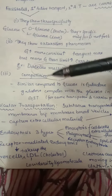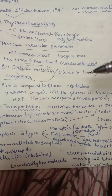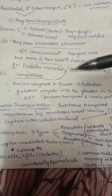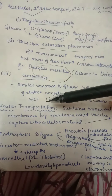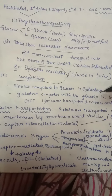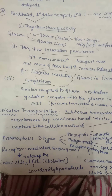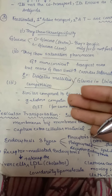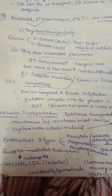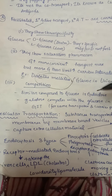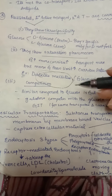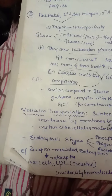There is also competition: galactose, which is structurally similar to glucose, competes with glucose at the GIT for the same transporter and carrier protein. Since there are no separate transporters, glucose and galactose compete for the same one.